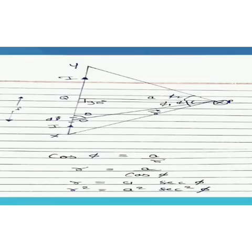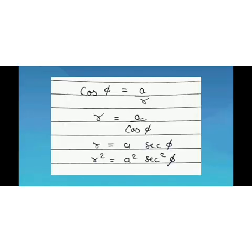Next, we find the value of R in terms of φ. Using the cosine formula: cos φ = base/hypotenuse = A/R, therefore R = A/cos φ = A sec φ. So wherever R² appears, we substitute A² sec² φ. And sin θ is replaced by cos φ.